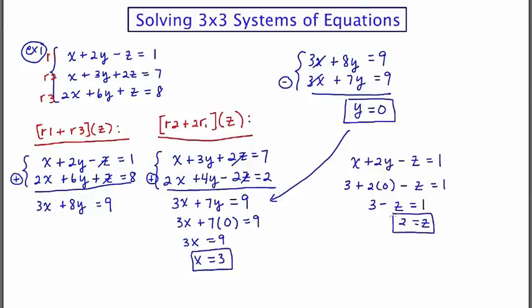Now it's customary to express your answer as an ordered triple in alphabetical order. So in this case, it will be X, Y, Z, or 3, 0, 2. So this is the solution for the 3 by 3 system.